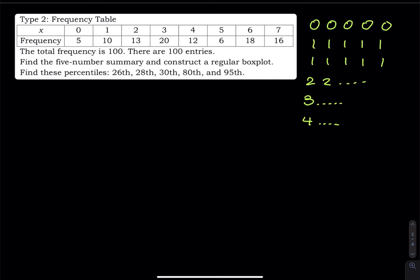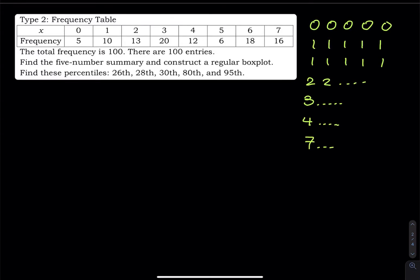Now, how do we find the five-number summary when we're working with a frequency table instead of a list? Let's get the minimum and maximum. Just look at the X values: the smallest data value is zero, and the largest data value is seven — because at the end, you have a seven sixteen times. So the minimum equals zero and the maximum equals seven.